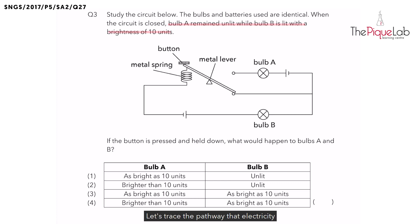Let's trace the pathway that electricity can flow through bulb B when the metal lever is in this position. We will start from the battery, through bulb B, up this wire, through the metal lever and down the metal spring, and back to the battery.